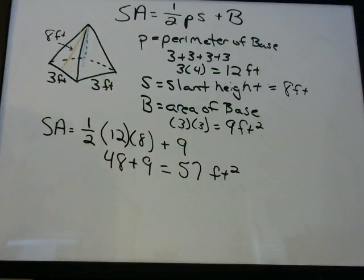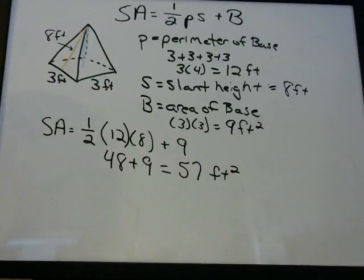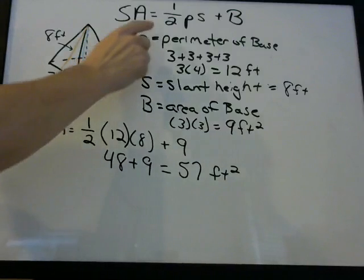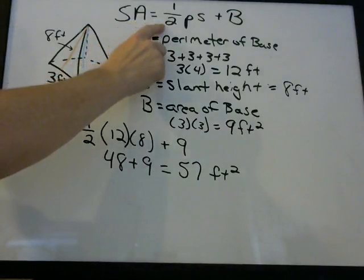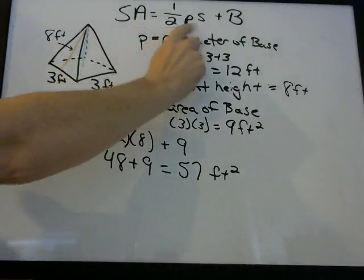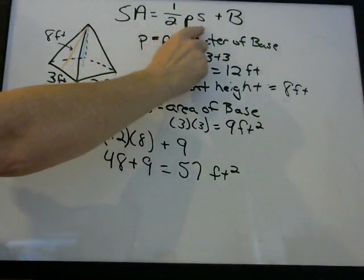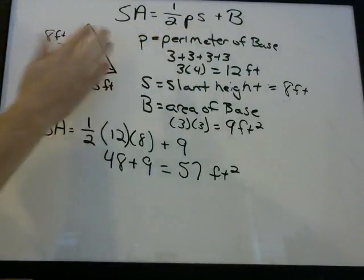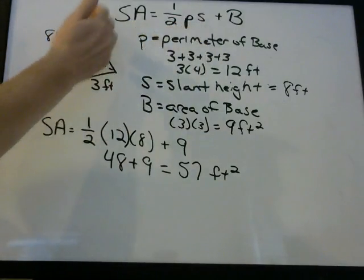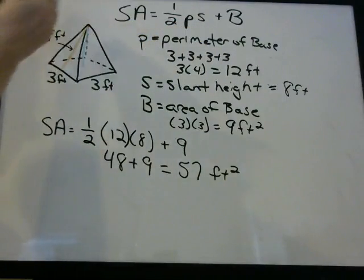It's also important to remember what we are doing in this formula so you can handle something more challenging. This first part — one-half perimeter times slant height — is giving us the area for the sides, the triangular sides of the pyramid.